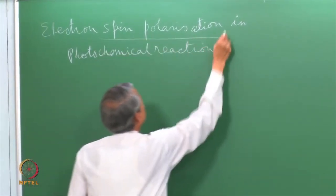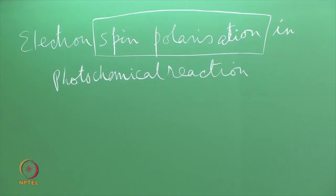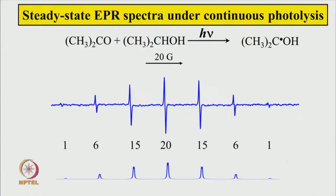Before understanding what this term means, let us see some examples. Here the steady-state EPR spectrum of a particular system is shown: acetone mixed with isopropanol as solvent, irradiated with UV light that is on all the time. We record the EPR spectrum the way we normally do. This is the steady-state EPR spectrum recorded under continuous photolysis. From the intensities of the various hyperfine lines, we can definitely attribute it to a specific radical.